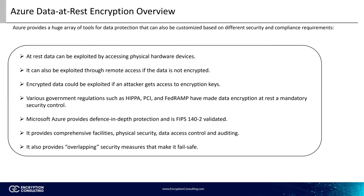Let's discuss why encryption of data at rest is done. The reason for data at rest encryption is to securely encode confidential data. Additionally, data encryption at rest is a mandatory security control as per various government regulations such as HIPAA, PCI, or FedRAMP. Azure's approach is FIPS 140-2 validated due to its use of symmetric encryption to encrypt and decrypt large amounts of data quickly. It's important to note that at-rest data can be exploited either by accessing physical hardware devices or by establishing remote access unless the data is encrypted. However, even encrypted data can be exploited if encryption keys are exposed. Microsoft Azure provides comprehensive facilities, physical security, data access control, and auditing, and also overlapping security measures that make it fail safe. This means that if one measure fails, it still operates with the remaining controls.